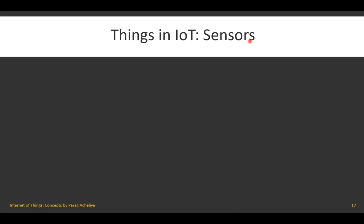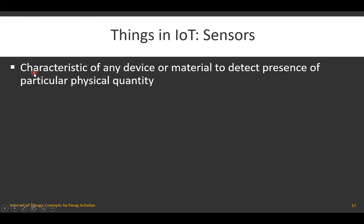There are so many sensors available that can be used to develop or implement any IoT application, depending on the application you are going to build. So what exactly is a sensor? A sensor is the characteristic of any device or material to detect the presence of a particular physical quantity. The sensor will detect whether that object or thing is physically available or not, and all its properties will be identified by the sensor.